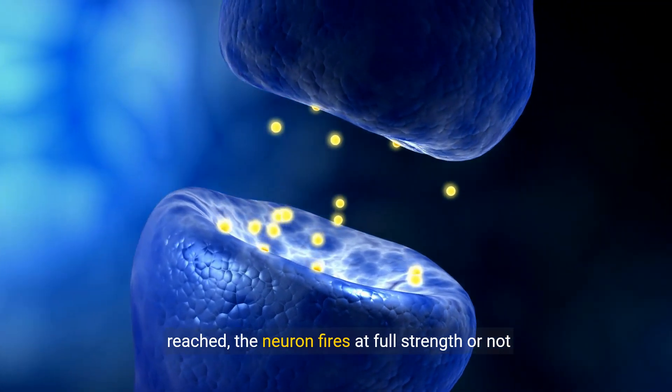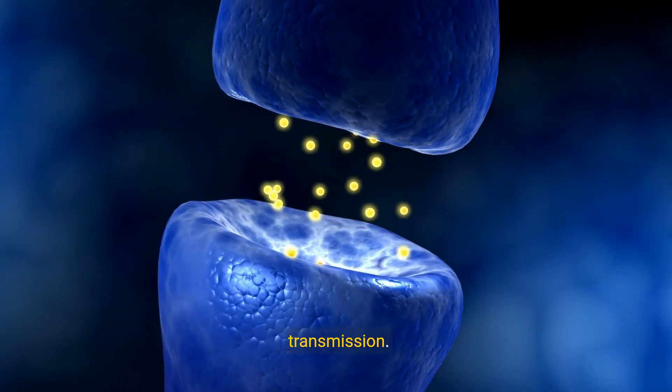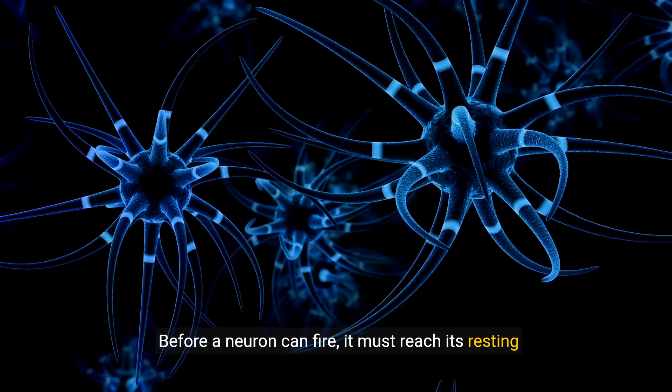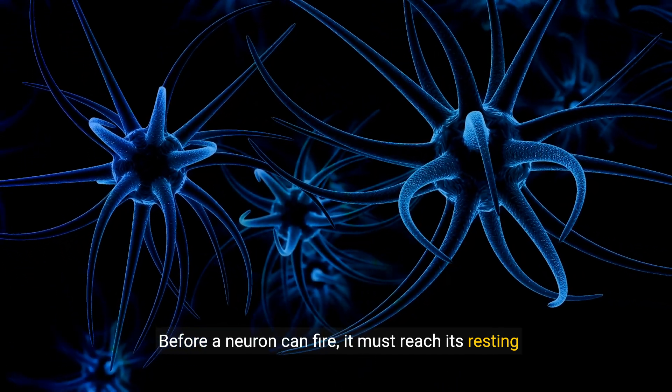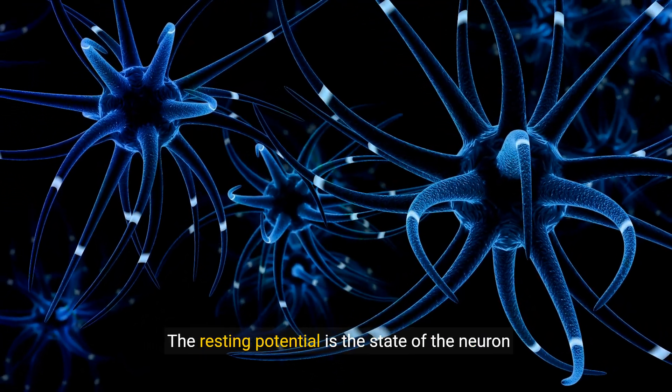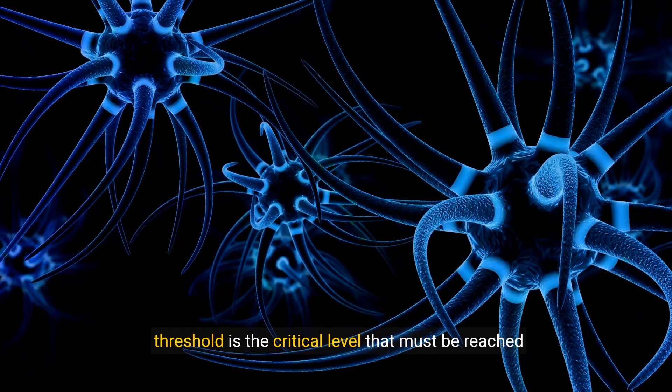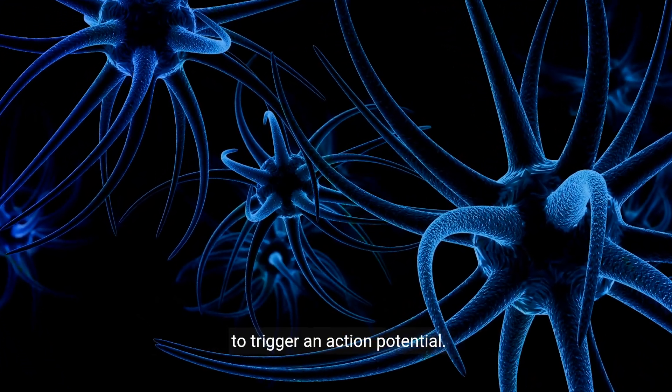The action potential follows the all-or-nothing principle, which states that once the threshold is reached, the neuron fires at full strength or not at all. This principle ensures consistent signal transmission. Before a neuron can fire, it must reach its resting potential and then surpass the threshold.